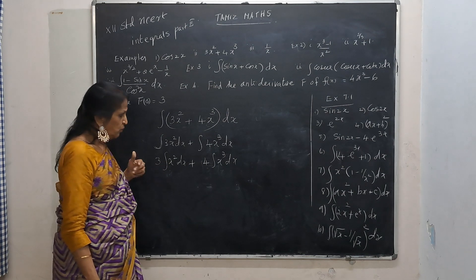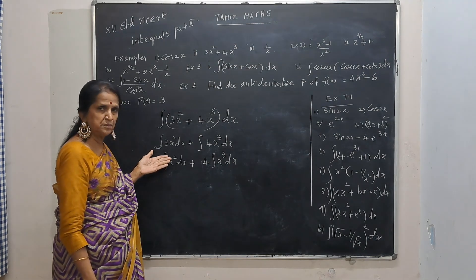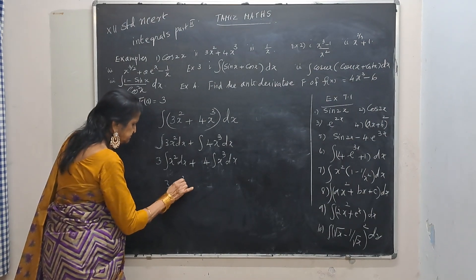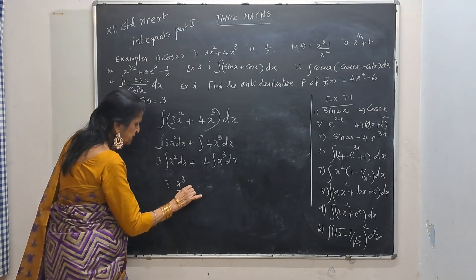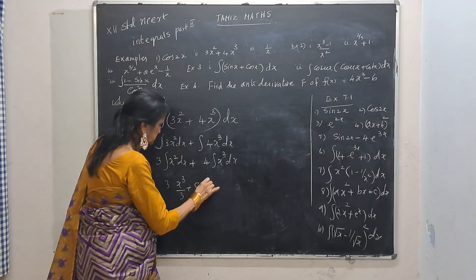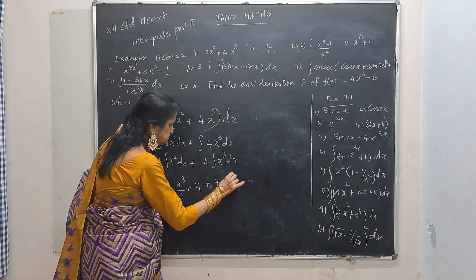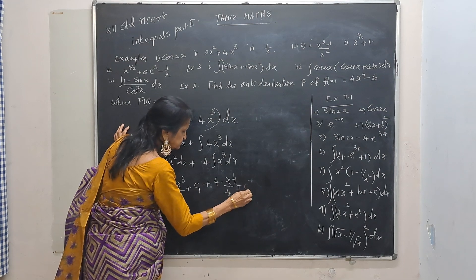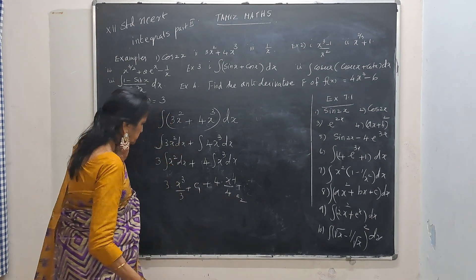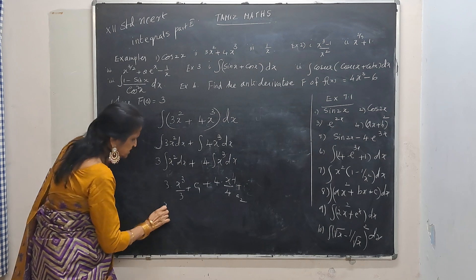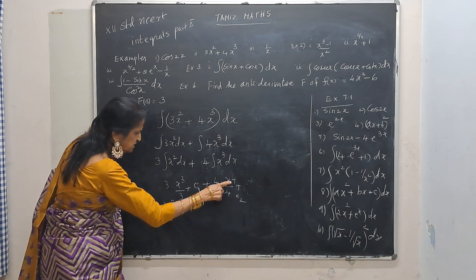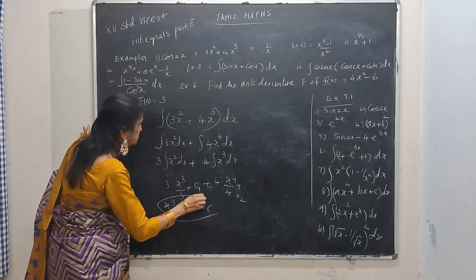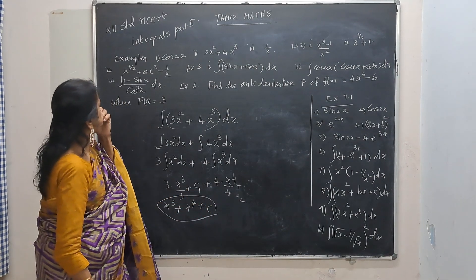By inspection: what function differentiated gives x squared? We did x cubed by 3. So 3 times x cubed by 3 plus c1, plus 4 times x to the power 4 by 4 plus c2. The 3 and 3 cancel, and the 4 and 4 cancel, giving x cubed plus x to the power 4, plus c. Differentiate this fully: x cubed gives 3x squared, x to the power 4 gives 4x cubed, and derivative of c is 0.